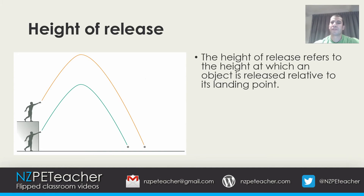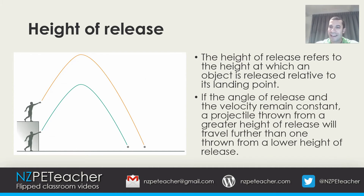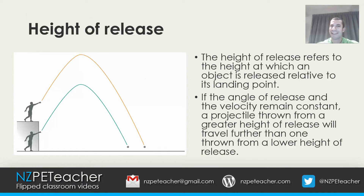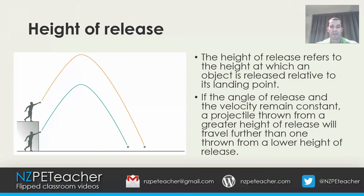The height of release refers to the height at which an object is released relative to its landing point. If the angle of release and the velocity remain constant, a projectile thrown from a greater height of release will travel further than one thrown from a lower height. For example, if a tall athlete and a short athlete release a discus at the same speed and angle, the taller athlete releases from a higher point and, in theory, their projectile would have more time in the air, allowing them to throw further.